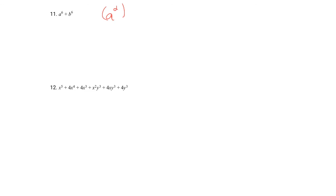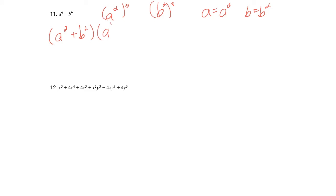a to the 6th plus b to the 6th — it's almost exactly like the one we did before, except we can't look at the difference of two squares since there's a plus in the middle. So we're going to make this the sum of two cubes. a squared cubed is a to the 6th, and b squared cubed is b to the 6th. So our a will be a squared and b is b squared. Sum of two cubes gives: a squared plus b squared times a to the 4th minus a squared b squared plus b to the 4th. And that's as good as we can do.